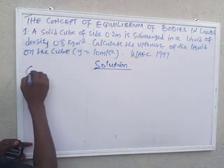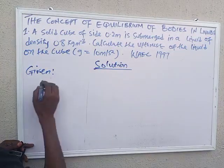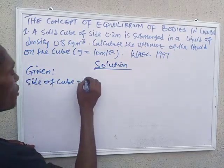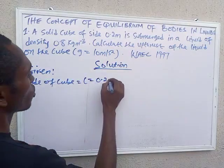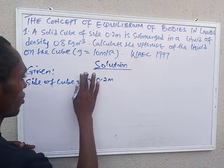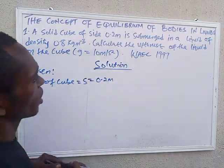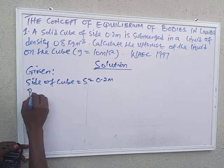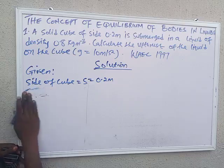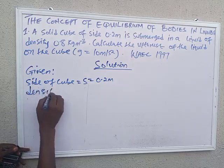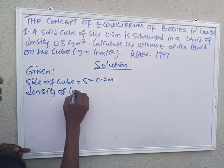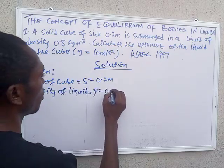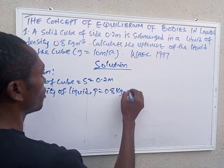The first thing we are given is the side of the cube. The side of the cube is given as S, which is equal to 0.2 meters. In a liquid of density — we use rho as a symbol — the density of the liquid, rho, is given as 0.8 kilograms per meter cubed.